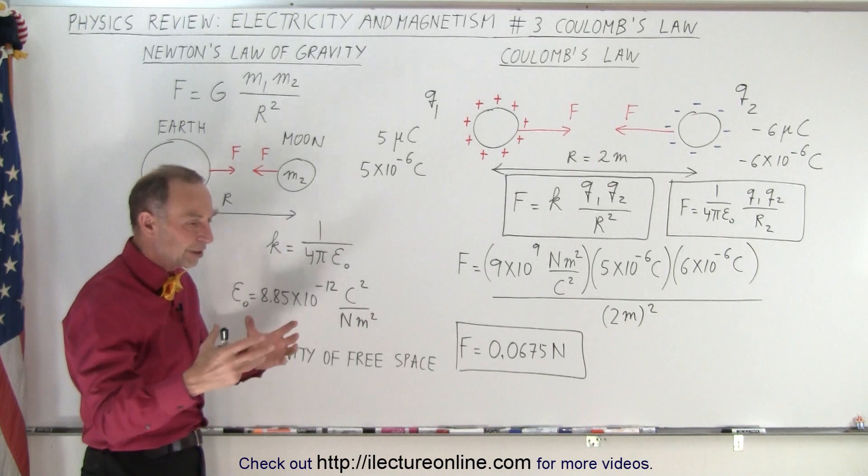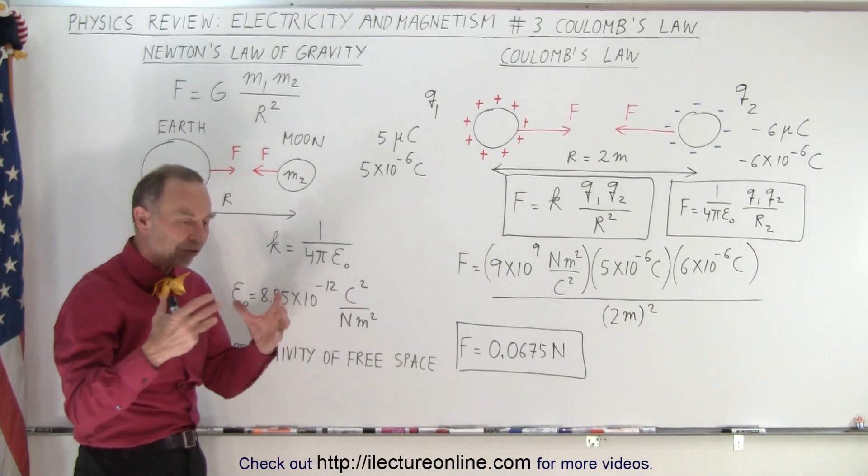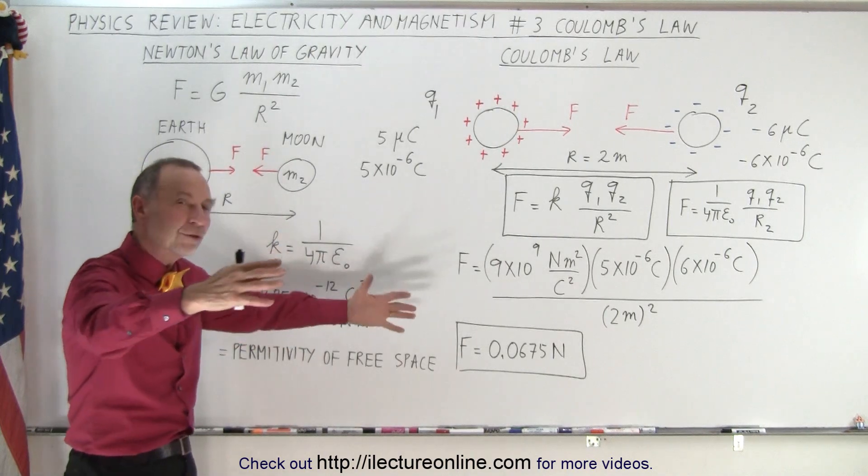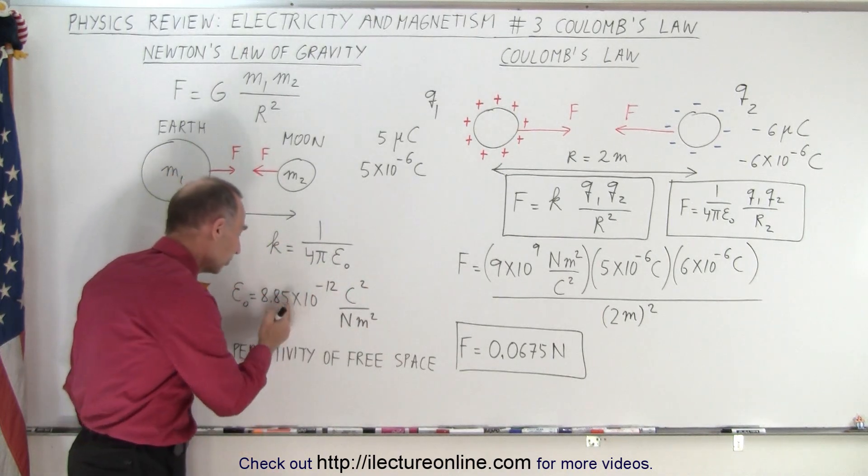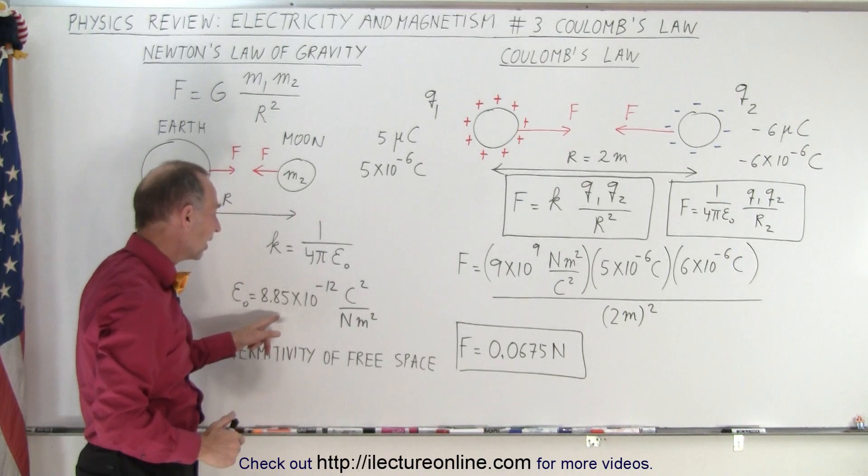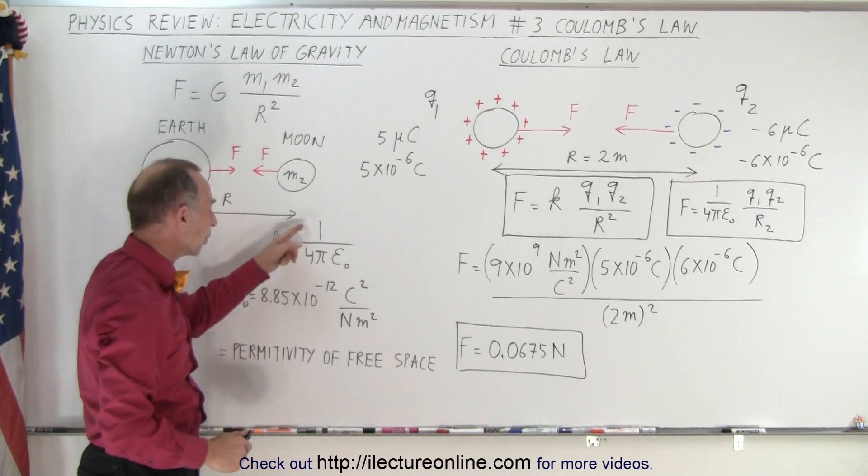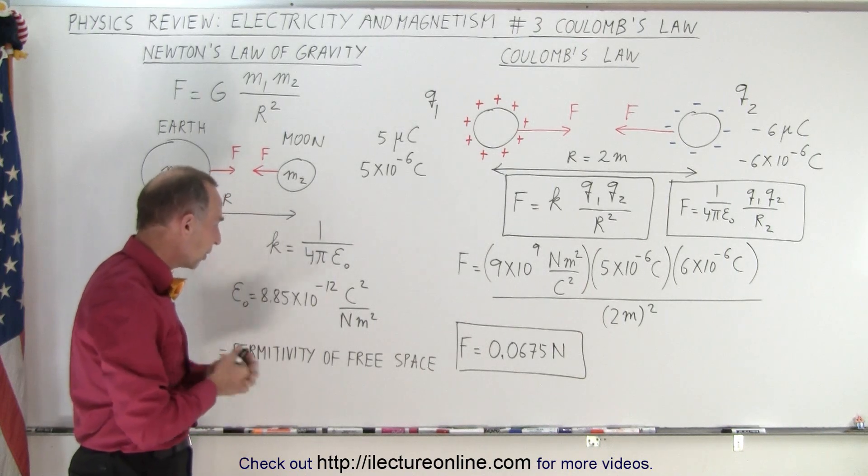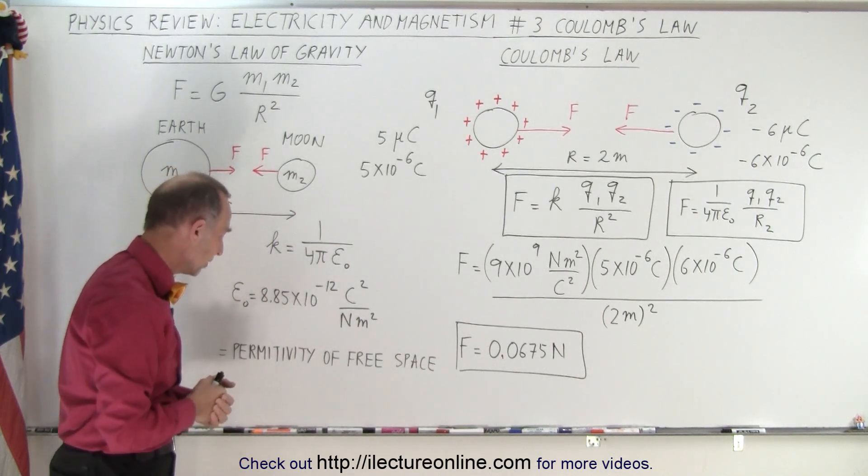But it has to do with the ability of the electric field, and we'll talk about that as well, the effect of the charges to carry through space. And that has a specific constant value that we found, and so we can also write K to be equal to 1 over 4 pi epsilon sub-naught, where epsilon sub-naught is about 8.85 times 10 to the minus 12 Coulomb squared per Newton meter squared.